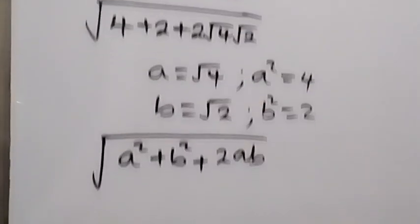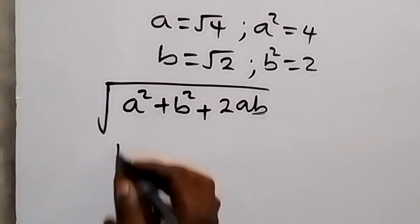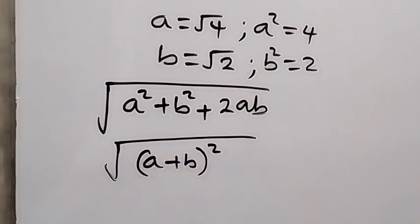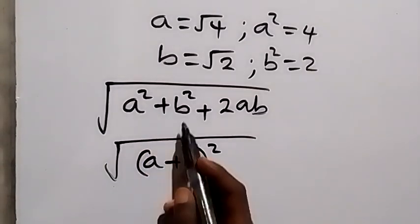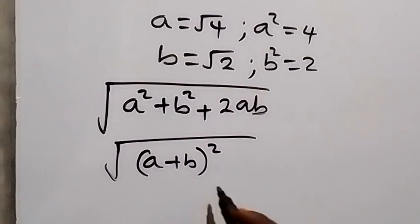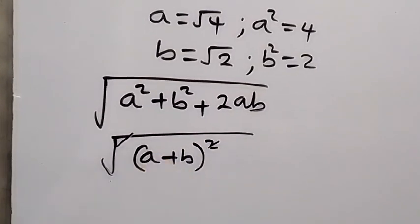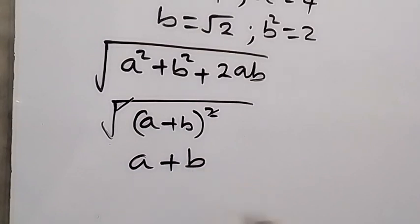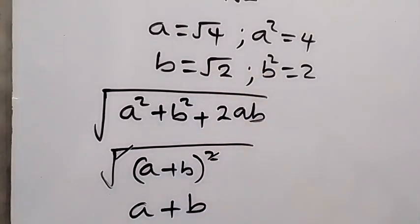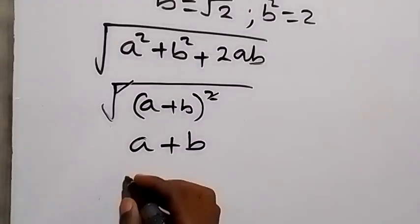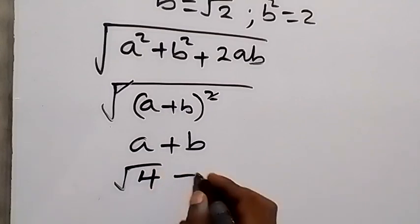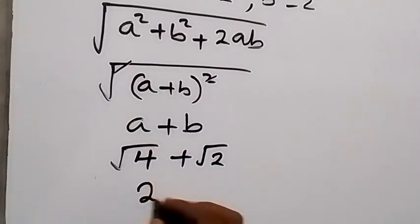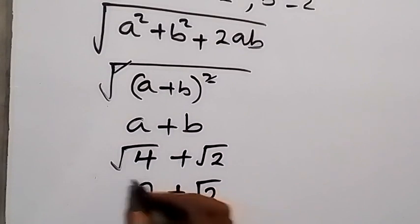What we have here we can summarize as the square root of (a plus b) squared, because the expansion gives us a squared plus b squared plus 2ab. We can then use the square to cancel the square root, so this becomes a plus b. Since a is root 4 and b is root 2, this becomes root 4 plus root 2.